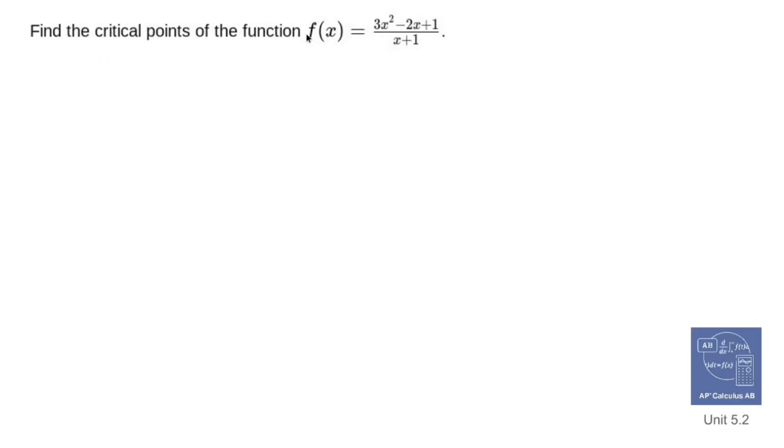Find the critical points of the function f(x) equals 3x squared minus 2x plus 1 all over x plus 1. Usually when we're finding critical points, we have some type of polynomial. Well, now we have a rational function, which means not only do we care when f prime of x equals 0, but we also care about when the original function is undefined. But right now we need to find where f prime of x equals 0.